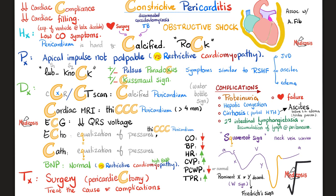Treatment: this is dystrophic calcification — irreversible. So you remove the pericardium by surgical pericardiectomy, removing that thick layer of calcification. You also need to treat the cause and the complications, which include proteinuria, heart failure, hepatic congestion, ascites, cirrhosis, portal hypertension, and secondary intestinal lymphangiectasia.